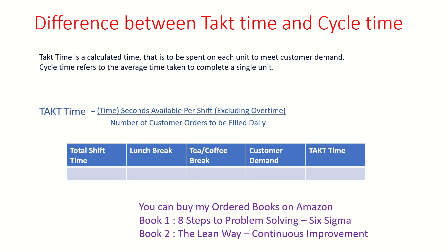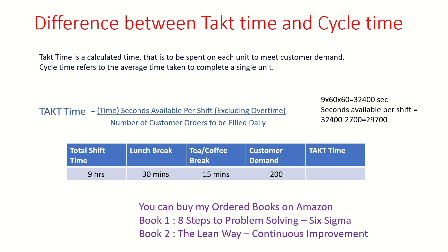Let us take an example to understand this better. Total shift time is 9 hours, which includes a lunch break of 30 minutes and a tea or coffee break of 15 minutes, and the overall customer demand is 200 units. The total available time is 9 × 60 × 60 = 32,400 seconds. Subtracting the break time of 45 minutes, which is 2,700 seconds, the available time per shift is 29,700 seconds. The takt time calculation: 29,700 ÷ 200 = 148.5 seconds.